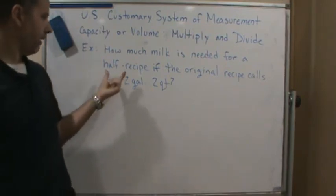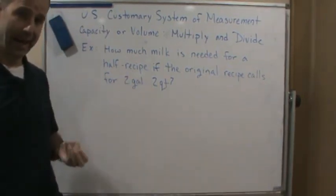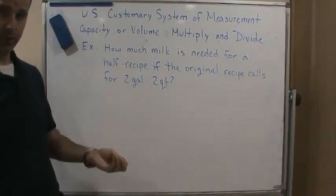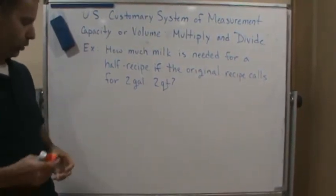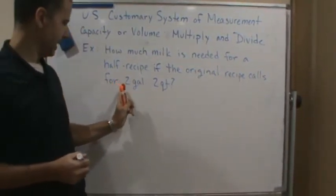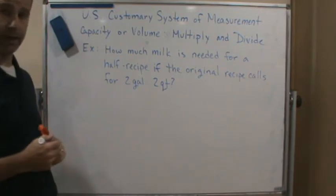Well, if it's a half recipe, that means we're going to need half of each unit. So I'm going to have to take half of this by dividing it by two.